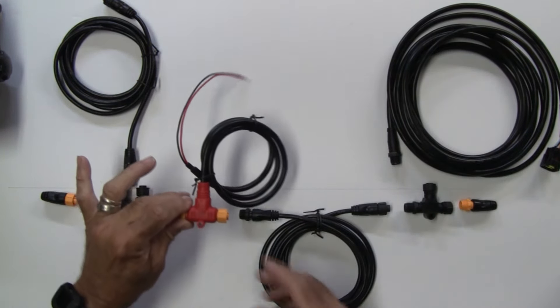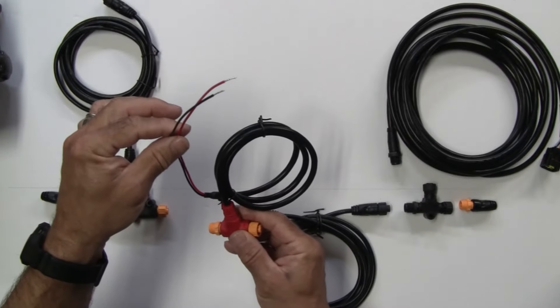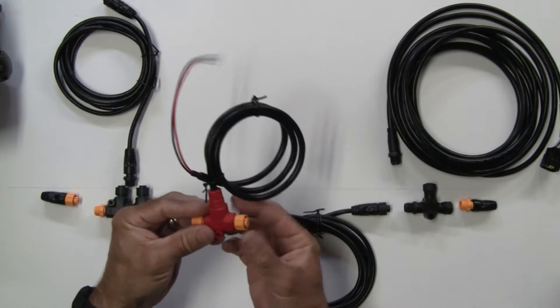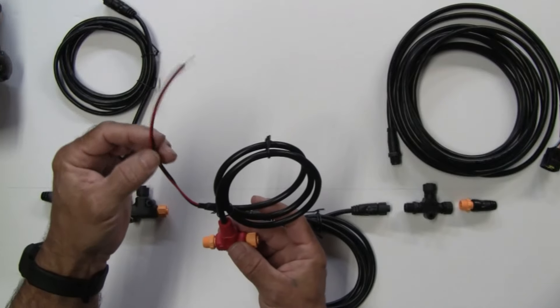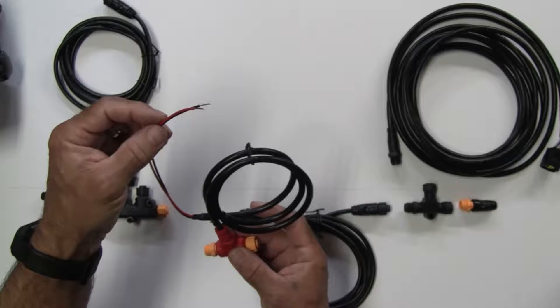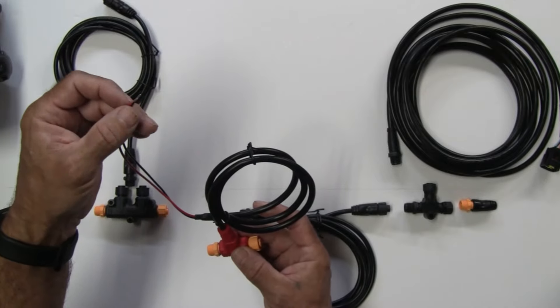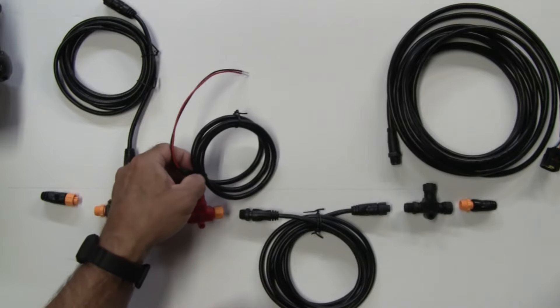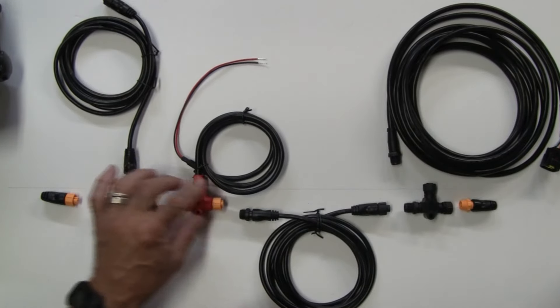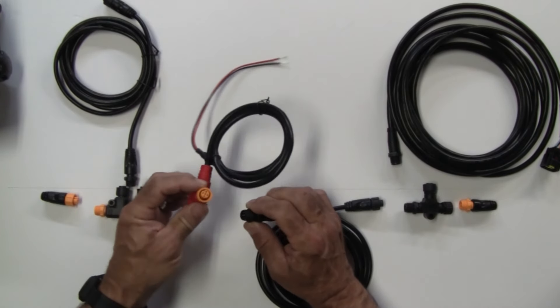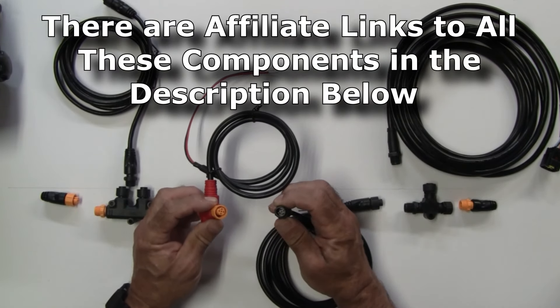The next component that you need is going to be power. You need to feed 12 volt power to your NMEA bus. This is a specialty connector. Some of them have fuses built in. I'm going to put this in the Montauk 17 to basically a circuit breaker, so we're not going to need a fuse on this, but you do need to feed power to the network.